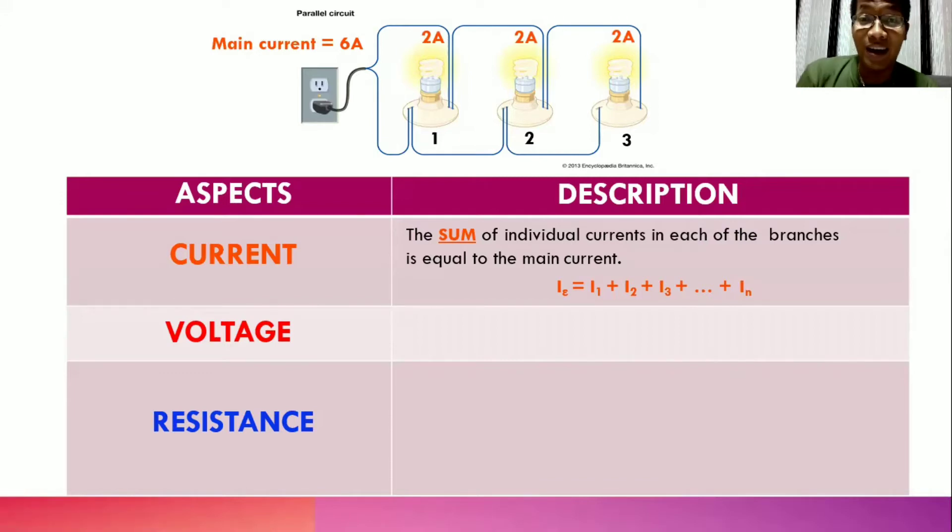What if the resistance in these bulbs are not equal? Let's assume that the current passing through bulb 1 is 1 Ampere, while bulb 2 has 2 Amperes, then bulb 3 has 3 Amperes. So still, when we add them up, it should be equal to 6 Ampere, which is the main current.